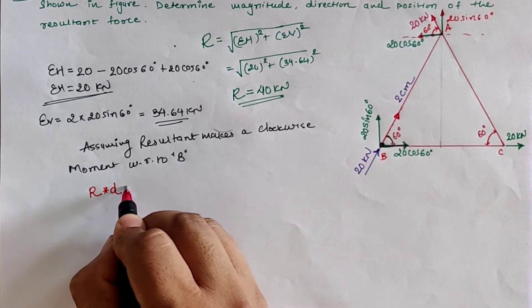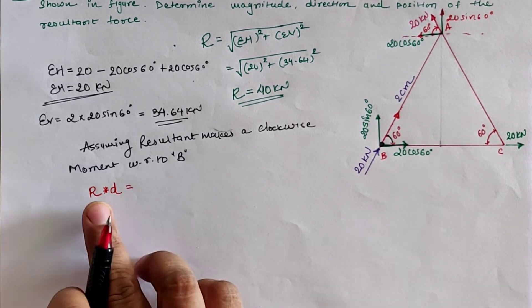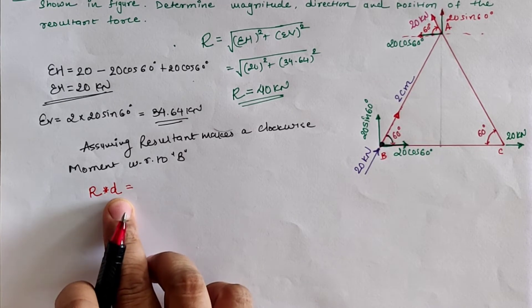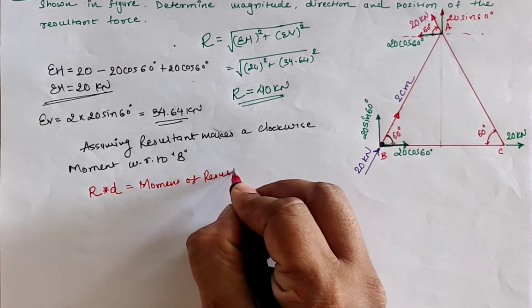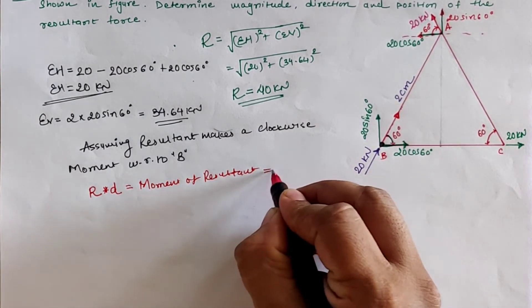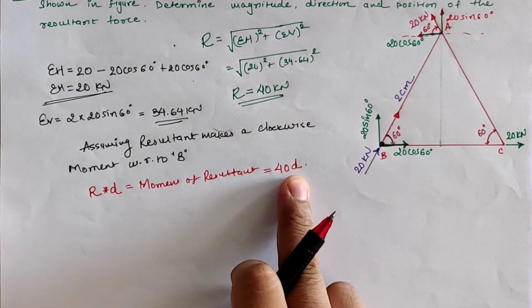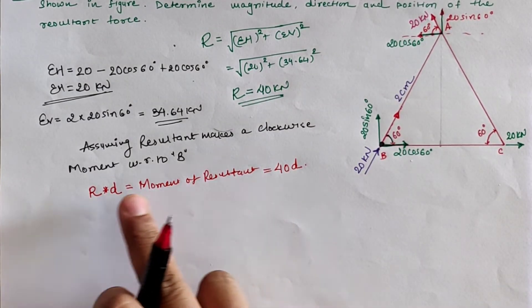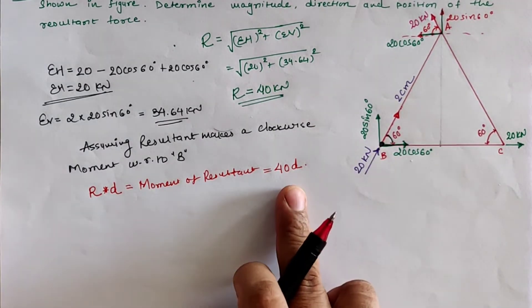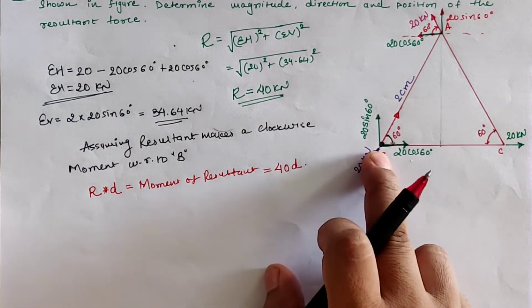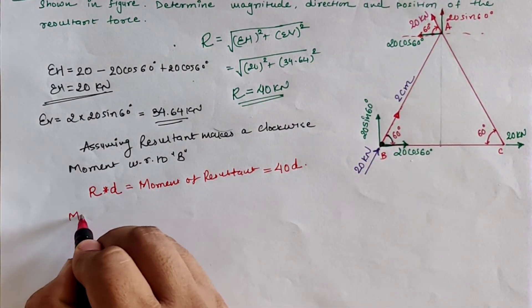The resultant moment is R into d, where d is the perpendicular distance of the resultant from B. So R × d equals 40 × d, where d is the perpendicular distance of the resultant with respect to B. We now equate this with the moment of the coplanar non-concurrent force system, taking the moment with respect to B.